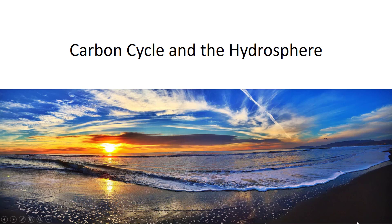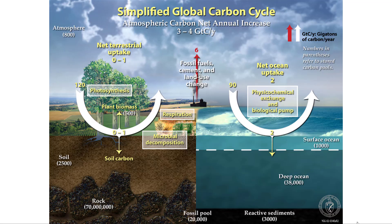We're going to discuss the carbon cycle and the hydrosphere, mostly the ocean. Most of the water on planet Earth, or the hydrosphere, is going to be found in the oceans. It makes up two-thirds of the surface of Earth as the ocean, with very tiny amounts in groundwater and also in surface water on land. So let's focus our attention on the ocean.